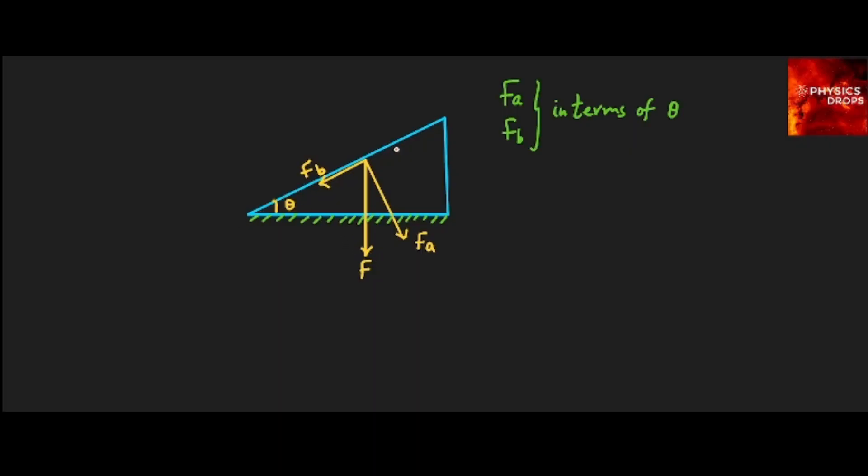We have a triangular block as shown in the figure which is placed on the horizontal ground. The angle shown here is theta. The question is there is a force that is acting at this point, downward force F. Now that can be resolved into two components, the X and Y components typically, which is FB and FA.